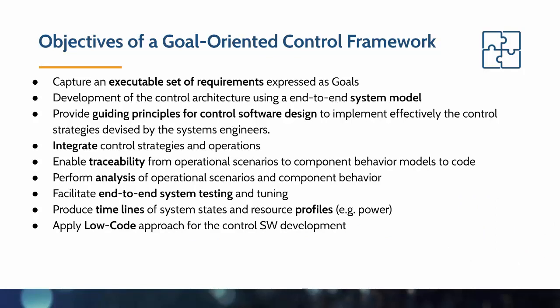The driver has some model of the world to anticipate the behavior and reactions from the environment, like the car. When you hit the accelerator pedal, you anticipate a certain acceleration — that's called the control diamond. The objectives of this goal-oriented control framework are to capture an executable set of requirements expressed as goals, use an end-to-end system model to develop the control architecture, integrate control strategies into operations, and enable traceability from operations to component behavior and code. The system model will allow analysis of operation scenarios, facilitate end-to-end testing and tuning, produce timelines of system states and resource profiles such as for power, and support a low-code approach for control software development.